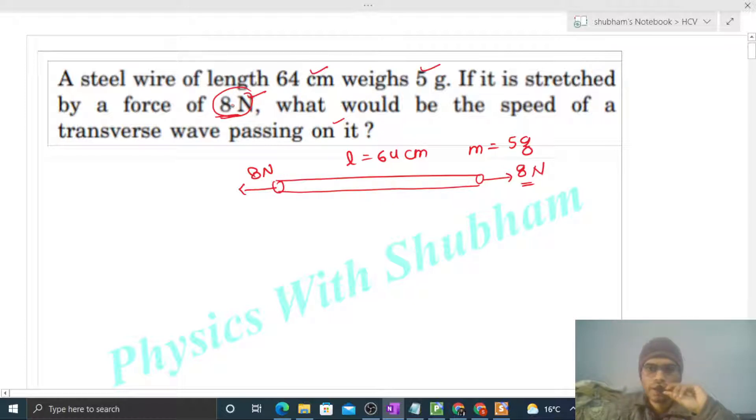And we have to find out the speed of the transverse wave on the wire. So that will be under root of tension divided by mu. Now tension is how much in the wire? That will be simply 8 Newton.